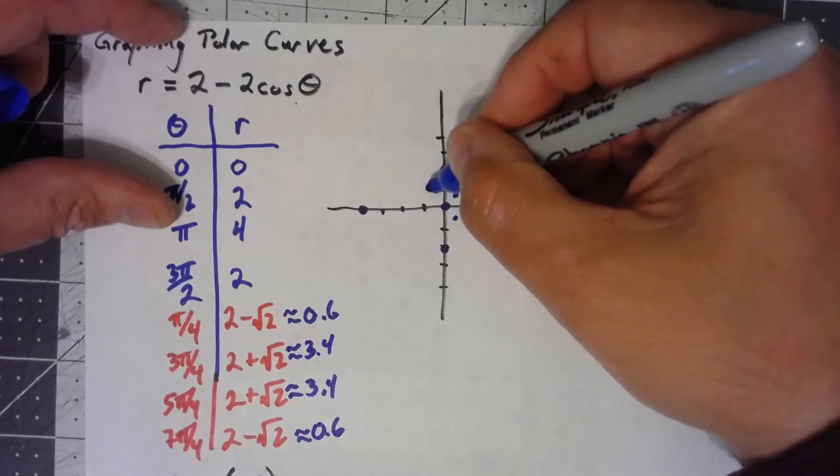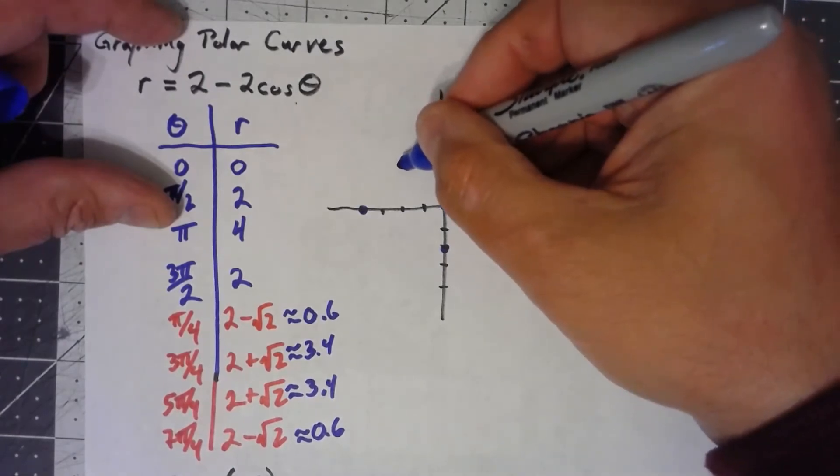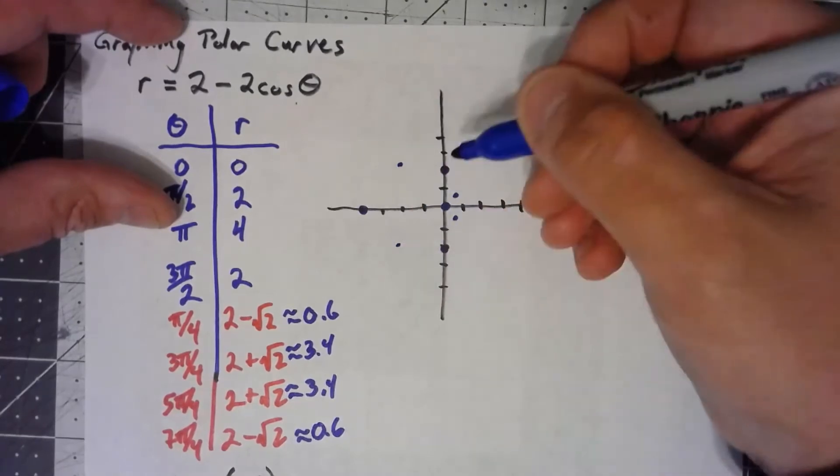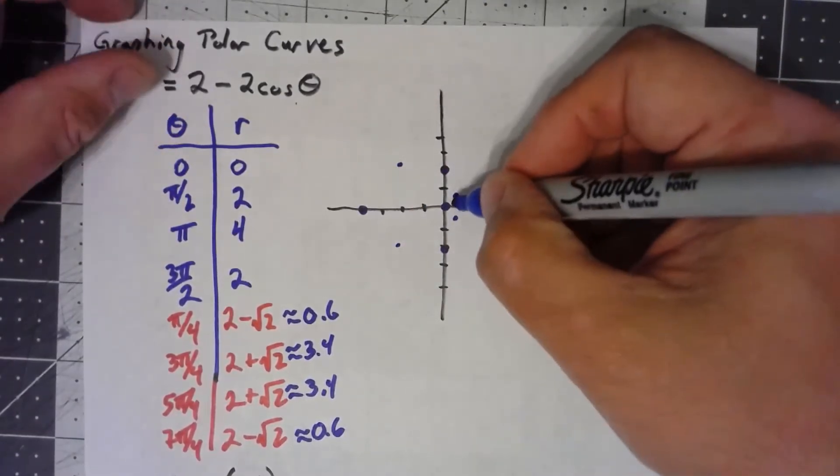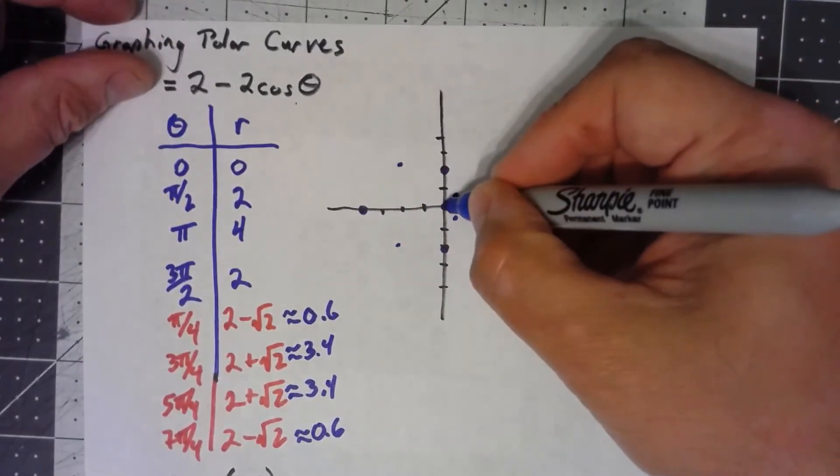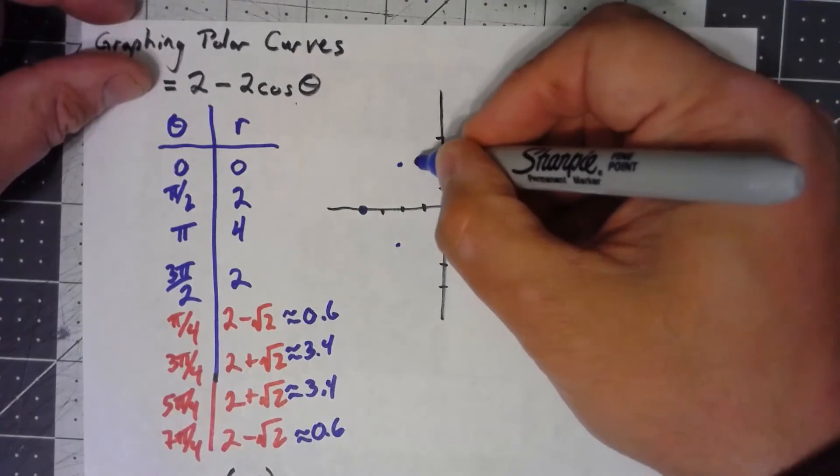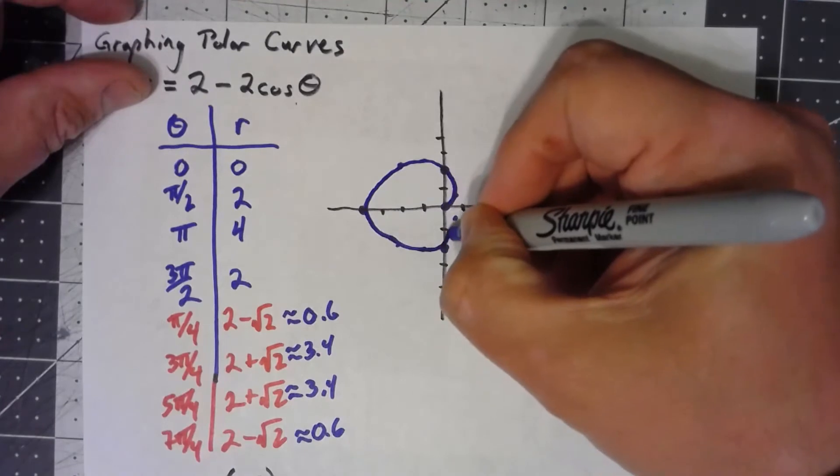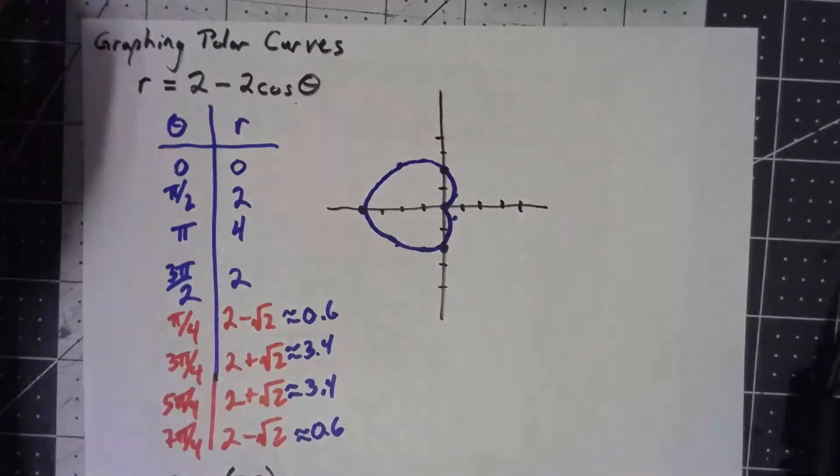But up here, we're going out 1, 2, 3.4, is somewhere around there. And now we start to see what this thing looks like. Comes around there, and does something like that.